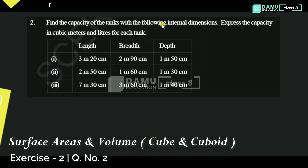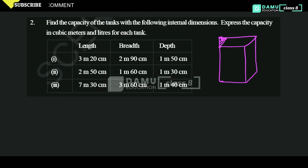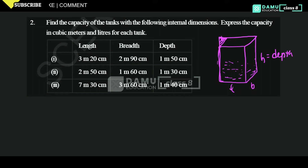They are given length, breadth, and depth for each tank. Tanks will be like a rectangular box — this is length, this is breadth, this is height. Height is nothing but depth. What we have to find is volume or capacity. Capacity is used for liquids, while volume is used for solids.